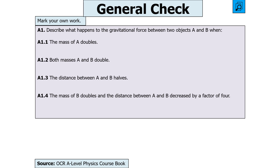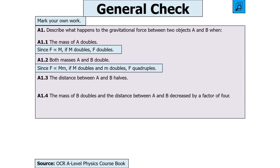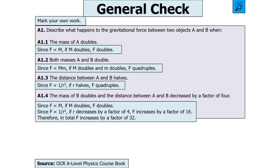This is a test of Newton's law of gravitation: F = GMM/R². F is directly proportional to M, so if M doubles, F doubles. F is directly proportional to MM (both masses), so if both double, F quadruples. F is directly proportional to 1/R², so if R halves, F quadruples (because it's half squared, so one over a quarter is times four). Linking the last part: M doubles so F doubles, and R decreases by a factor of four so F increases by a factor of 16, meaning F increases overall by a factor of 32.